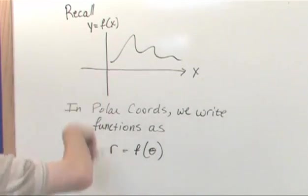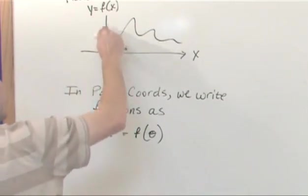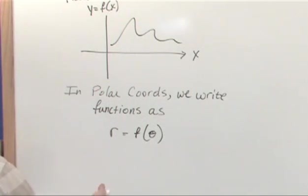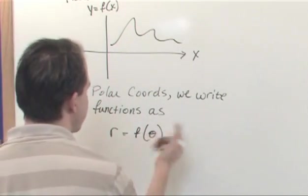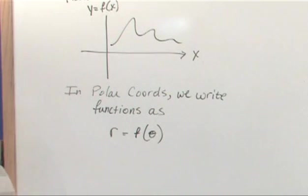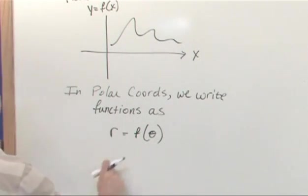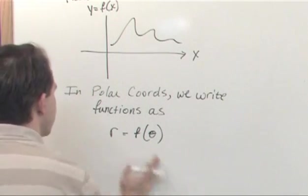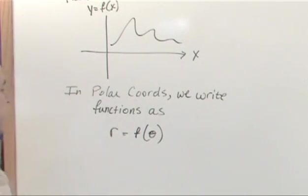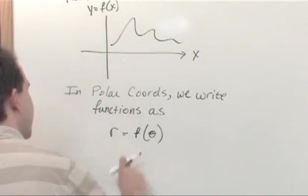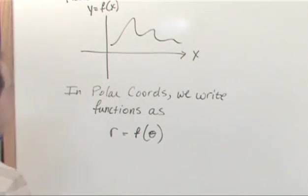You see the analogy is direct here. Instead of y, the other coordinate being a function of x, we say that r, which is one of the coordinates in the polar representation, is a function of the other coordinate theta. Remember what r is - it is the distance from the origin, and the angle is just the angle measured from the x-axis.